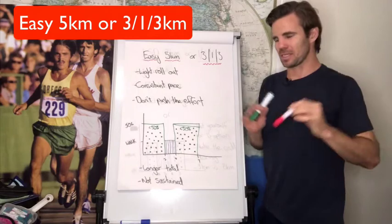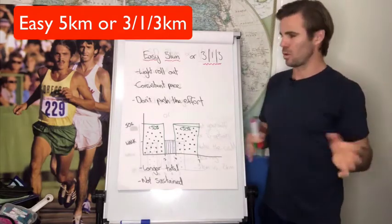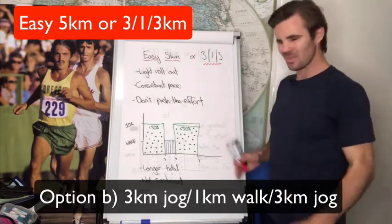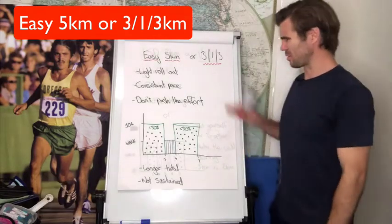If at some stage, either before or during the run, you decide that you're not going to make it quite to 5k, I've given you the option here to switch into a 3-1-3 scenario.